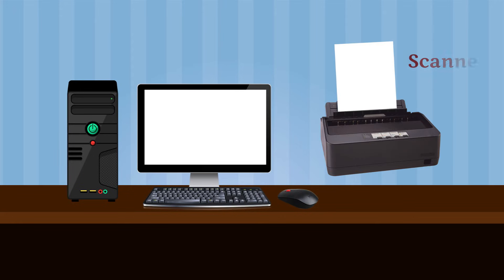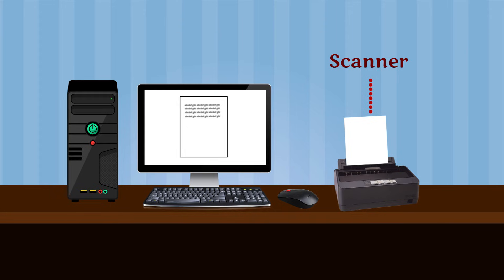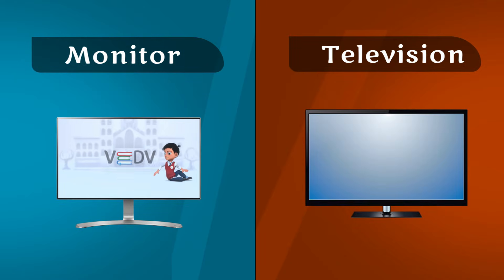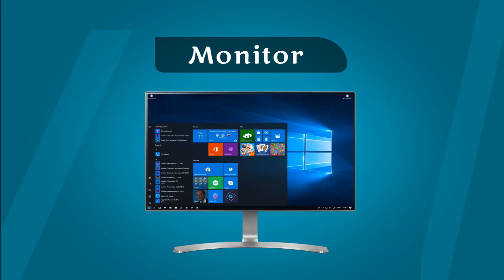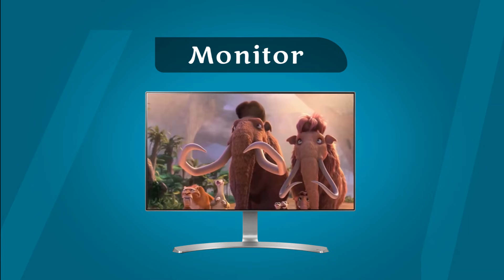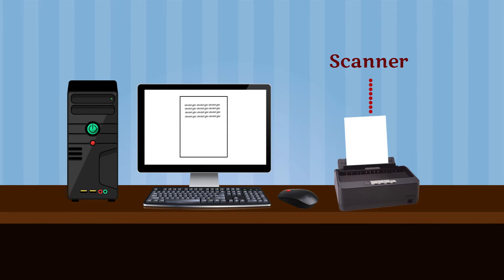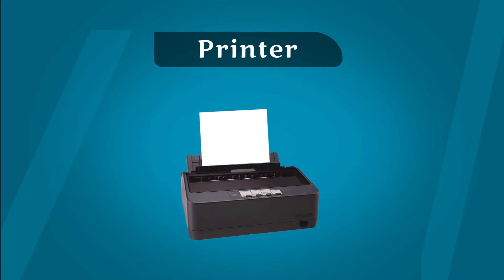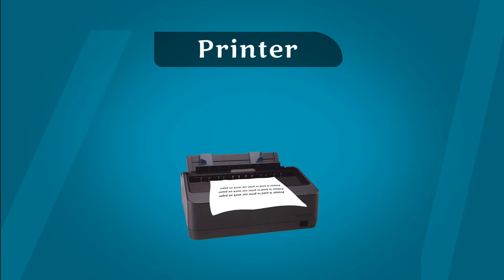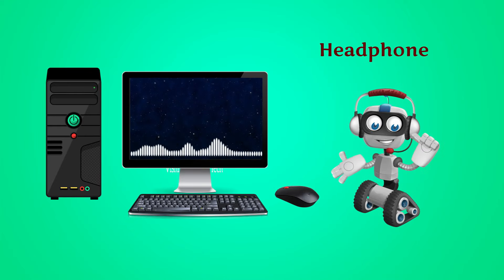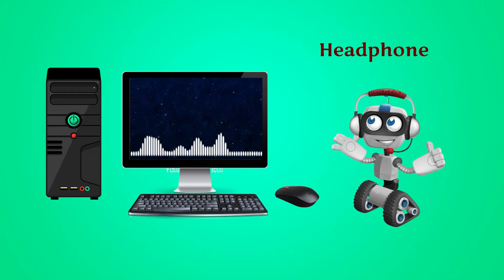The device which is used to show the output of processed data is called an output device. Examples of output devices are: Monitor — a monitor is like a television which displays the output. Every work we do on a computer will display on the monitor. The output on a monitor is called a soft copy. Printer — a printer is used to take a printout of work done on paper. The output on a printer is called a hard copy. Speaker — we use speakers to listen to sound from a computer. Headphone — we use headphones to listen to music without disturbing others.